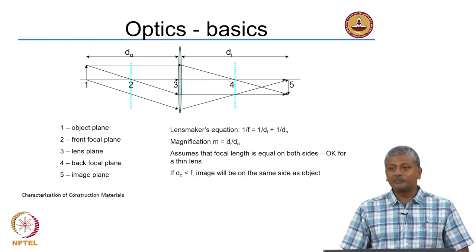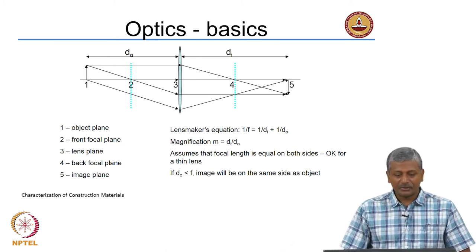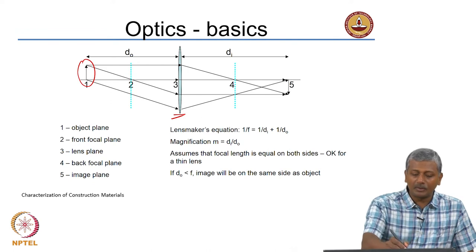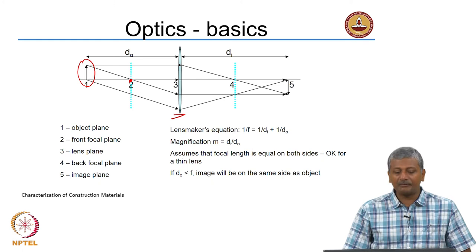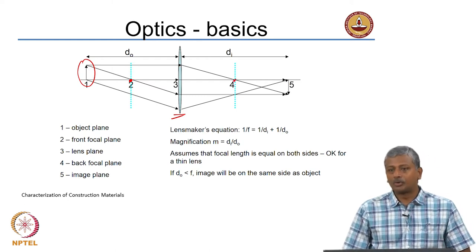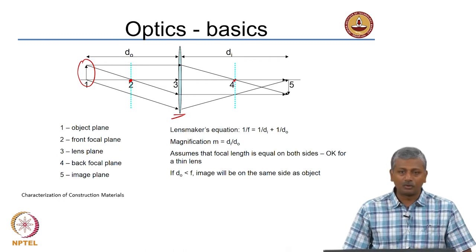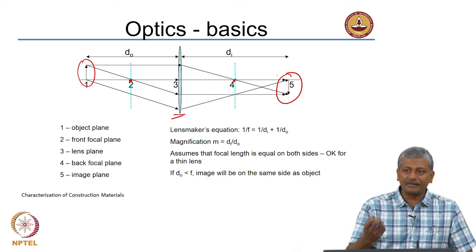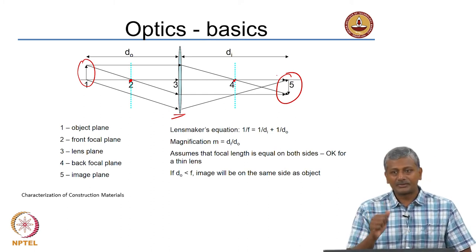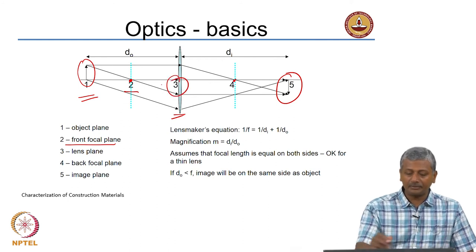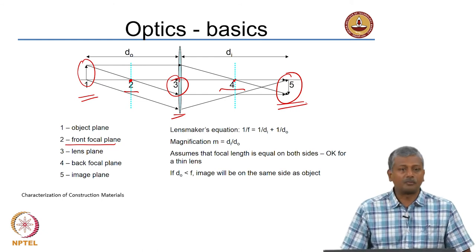This is a ray diagram familiar from middle school physics. You have a lens and an object that needs to be imaged on the other side. The rays traveling through the object pass through the focal point in the object plane; parallel rays go through the lens and also pass through the focal point on the other side. The rays converge on the focal point and the image is formed. This is a simple single-lens setup — for example, a magnifying lens. The numbered planes are: 1 = object plane, 2 = front focal plane, 3 = lens plane, 4 = back focal plane, 5 = image plane.